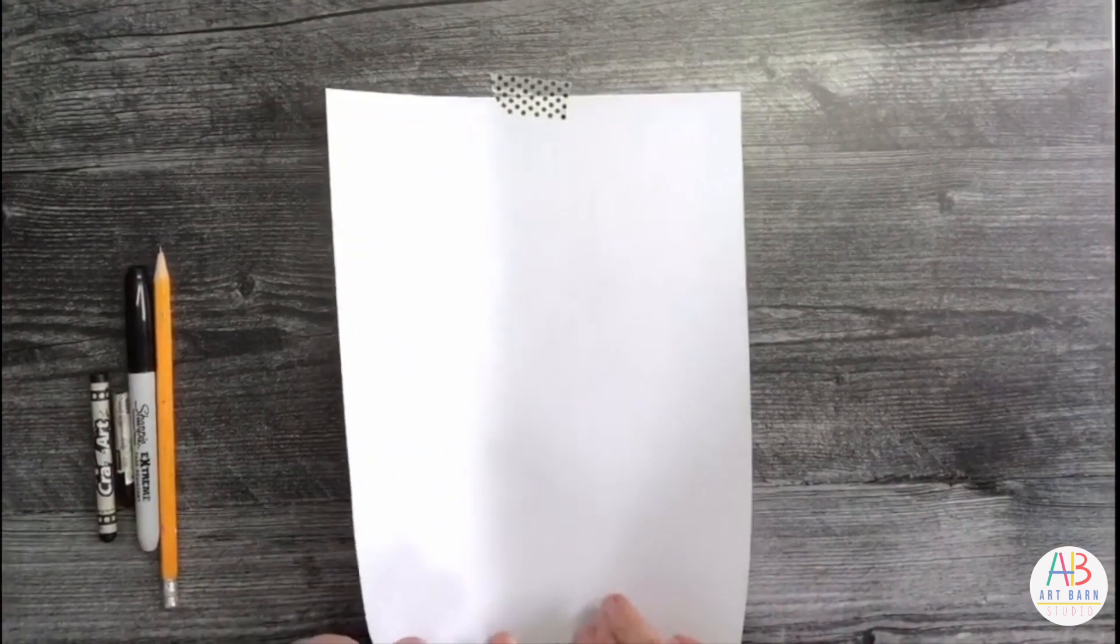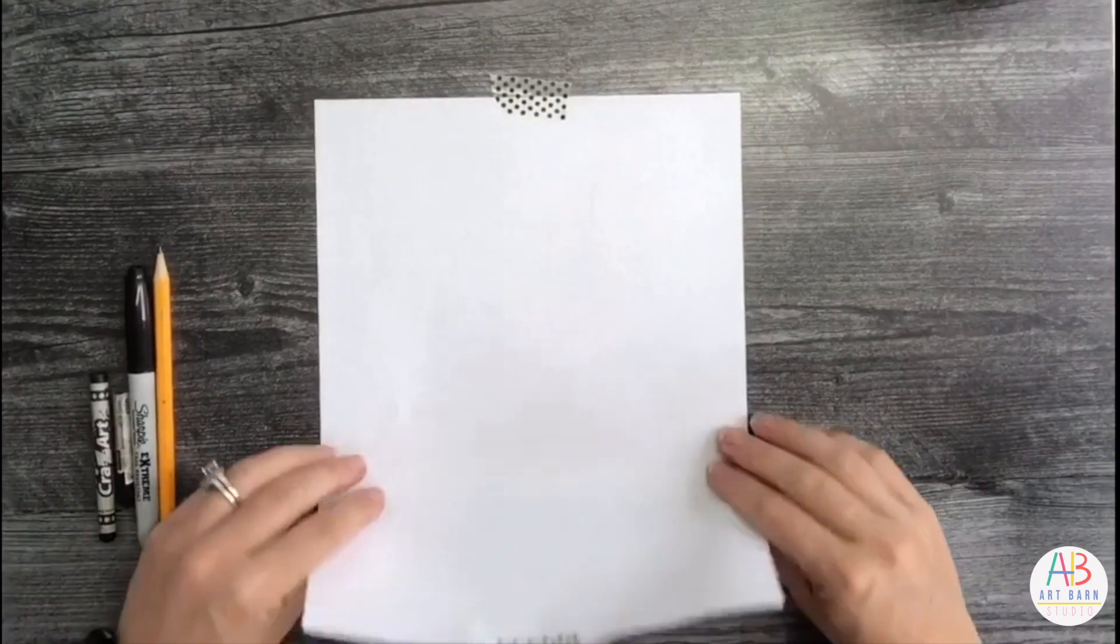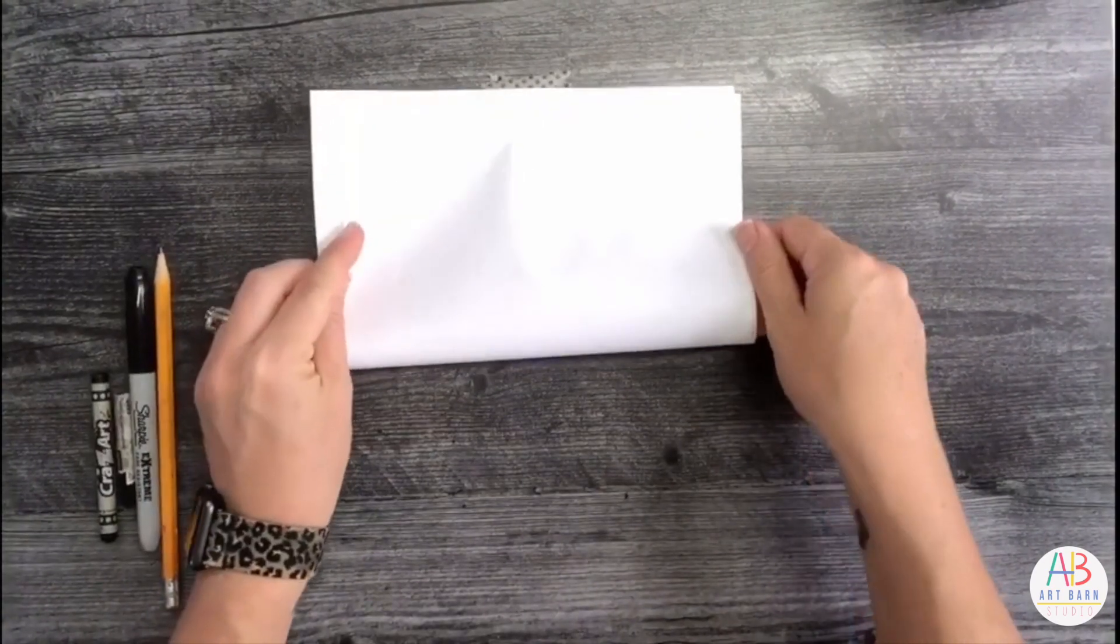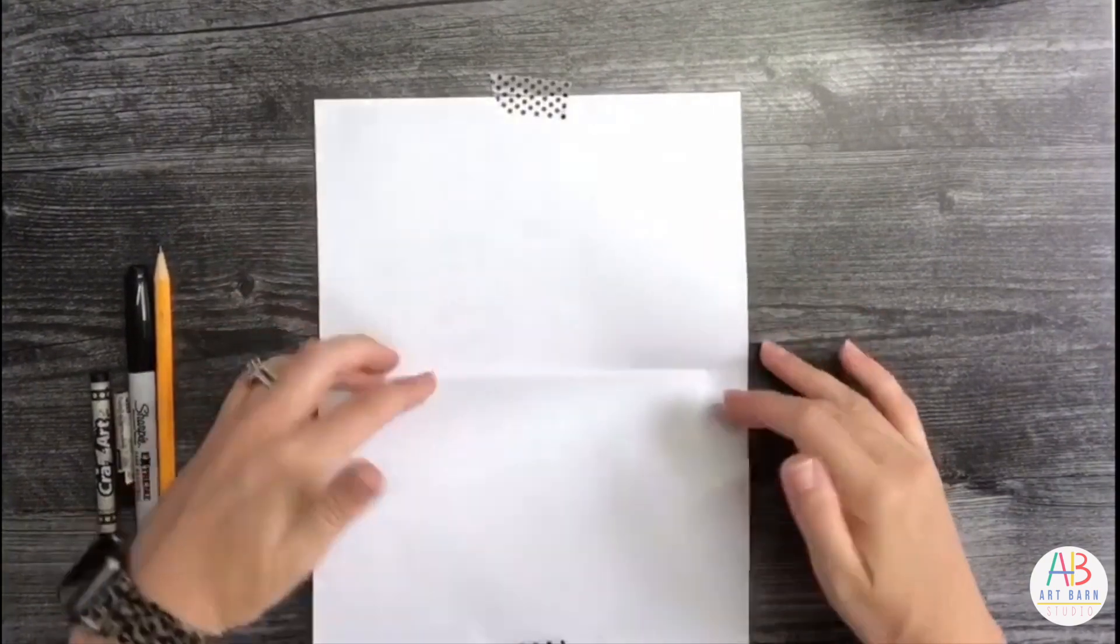So take your bottom of your paper and you're going to fold it to meet the top, gently crease it, and then open it back up.